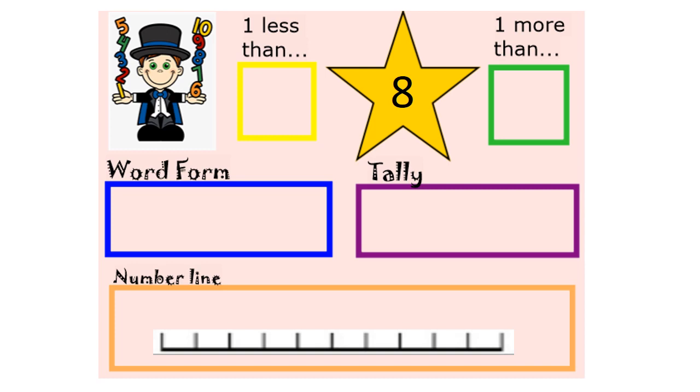Then we're going to fill out all the rest of the boxes. With one more and one less, we're going to try and use full sentences. So one less than eight is seven, and we can try and write the numeral seven. One more than eight is nine, again we can try and write it.